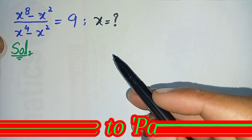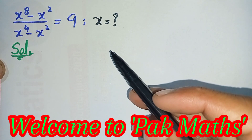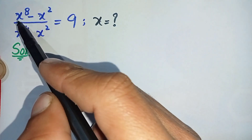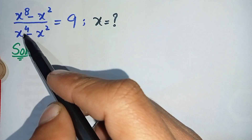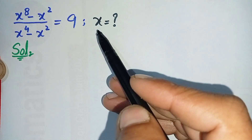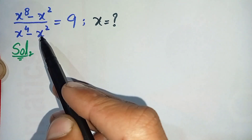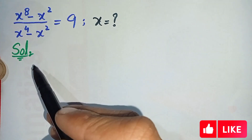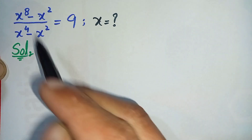Hello everyone, welcome to ParkMas. In this video I'm going to solve this interesting exponential math problem: x to the power 8 minus x squared, divided by x to the power negative x squared, is equal to 9. We will find the value of x. To solve this question properly, first we will write the solution and rewrite the question, then try to solve it step by step.